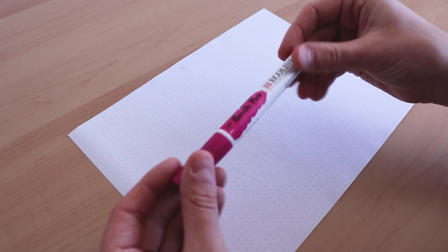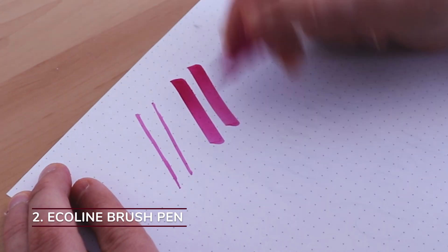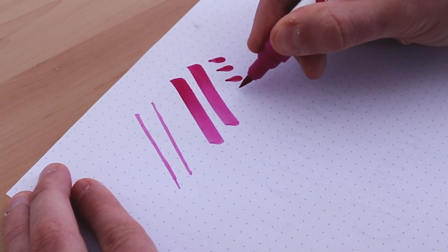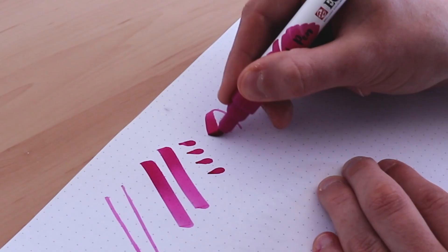Next up we have the Ecoline Brush Pen. The size of the nib is quite large. The nib elasticity is very soft and flexible. The ink flow is extremely wet.